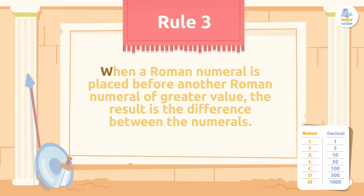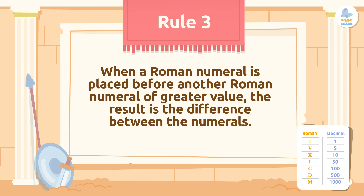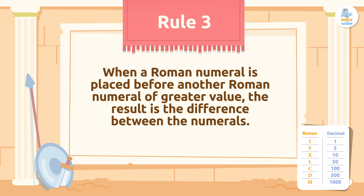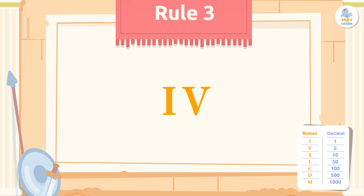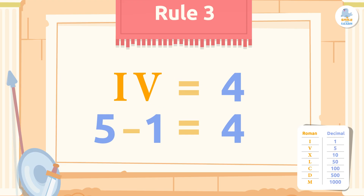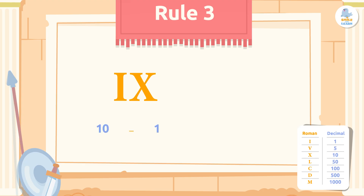Rule number 3: when a Roman numeral is placed before another Roman numeral of greater value, the result is the difference between the numerals. We can subtract the letter I (1) from the letter V (5) and X (10) when it is to the left of these numerals. When we subtract I from V, it looks like this: IV. This means 5 minus 1, or 4. When we subtract I (1) from X (10), it looks like this: IX. To calculate its value, we subtract 10 minus 1, which means IX represents the number 9.